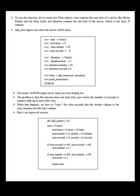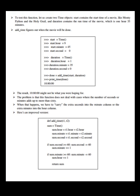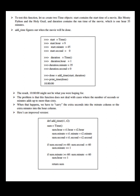To test this function, let's create two time objects. add_time figures out when the movie will be done. The result 10:80:00 might not be what you were hoping for. The problem is that this function does not deal with cases where the number of seconds or minutes adds up to more than 60. When that happens, we have to carry the extra seconds into the minute column or the extra minutes into the hour column. Here is an improved version.